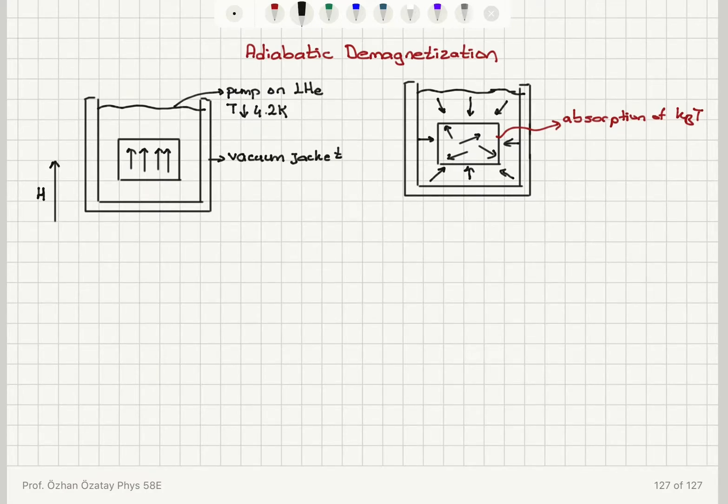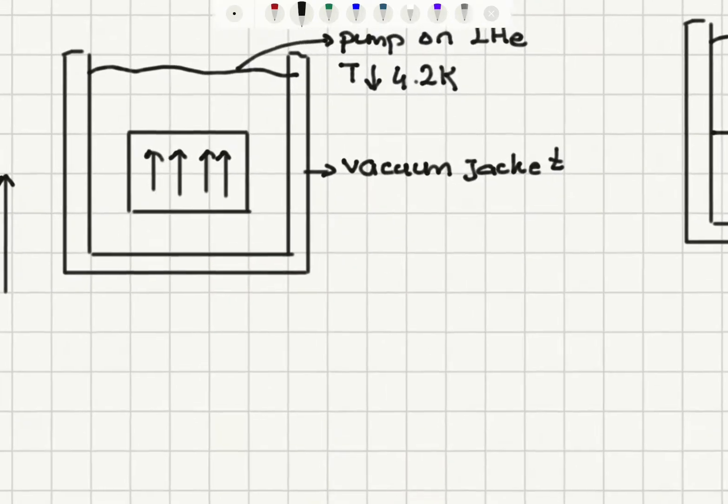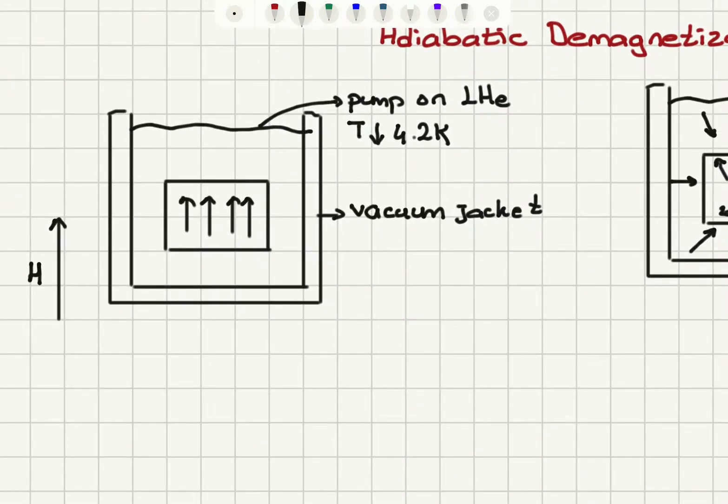So the procedure is as follows. We have a paramagnet that is inside a dewar which is filled with liquid helium. So the liquid helium fixes the temperature to 4.2 kelvin. By pumping on the liquid helium, we decrease the temperature even below 4.2 kelvin.